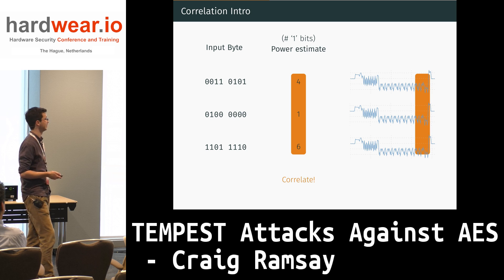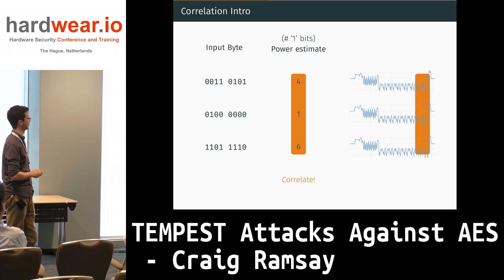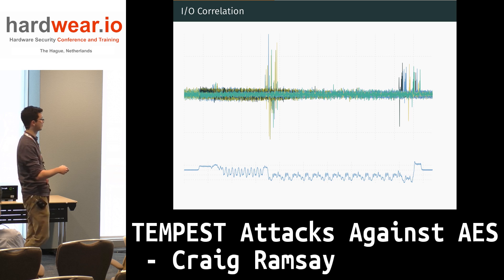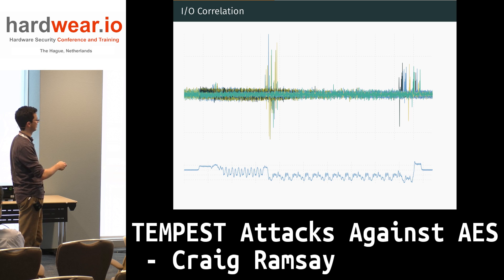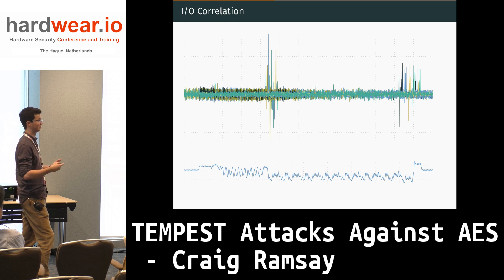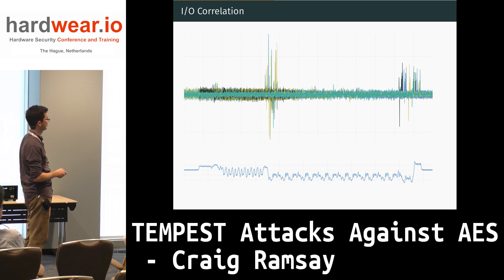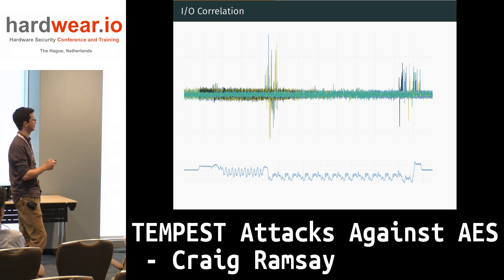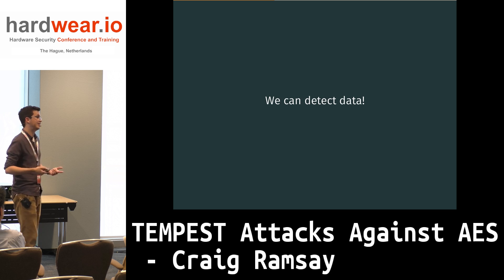Applying that to real input data, we get a trace showing correlation for each bit in the input and output data. You can see spikes just as we're starting encryption — where input data is being handled entering the first round — and similarly at the end as the output is being calculated. The fact that there's correlation in those two places and not anywhere in the middle suggests we can see that data has been handled by the device purely by measuring the field.